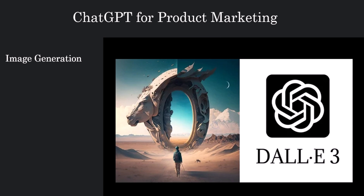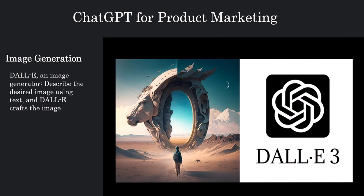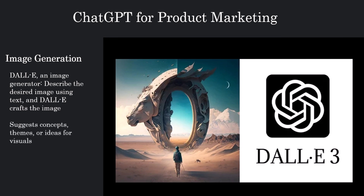DALL-E is an AI system distinct from ChatGPT. With ChatGPT, we input text and receive text as output. In contrast, DALL-E is an image generator — we describe the desired image using text and DALL-E crafts the image for us. ChatGPT can suggest concepts, themes, or ideas for visuals that would complement the ad copy, and you can use the same to generate images on DALL-E.